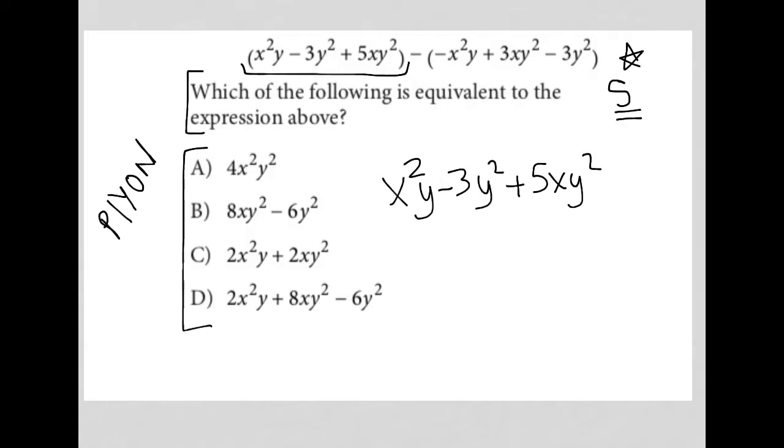So the next set of parentheses does have a negative sign on the outside of it, which means I would actually need to distribute that negative sign to each term inside the parentheses. So when I do that, I end up with a positive x squared y. So I'm actually going to place this right underneath this because that's going to make a lot of sense in a second here. And then I'm going to have a negative 3xy squared. So I'm going to put that under here because that's the like term with the 5xy squared. And then I'm going to have a positive 3y squared. So I'll put that under there, make that a plus 3y squared.